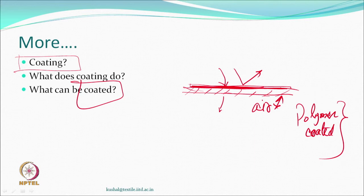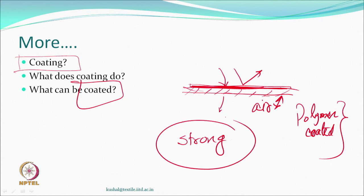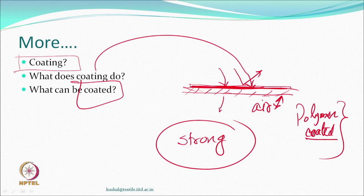What is the role of a textile in this? Textile is a strong material — the tensile properties and strength are contributed by the textile, while the coating increases resistance to penetration by water. Both have a role to play: textile gives you strength and flexibility, and the coating or film ensures water does not penetrate. That is how you make things waterproof.